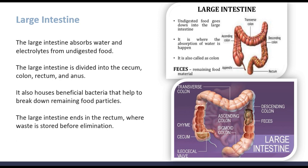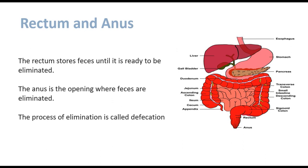The large intestine absorbs water and electrolytes from undigested food. It is divided into the cecum, colon, rectum, and anus. It also hosts beneficial bacteria that help to break down remaining food particles. The large intestine ends in the rectum, where waste is stored before elimination. The anus is the opening where feces are eliminated, and the process of elimination is called defecation.